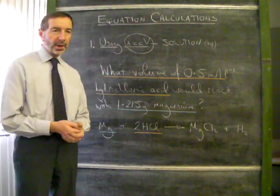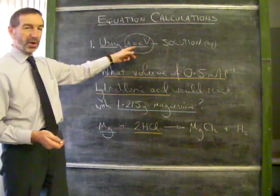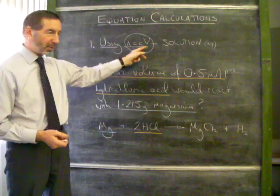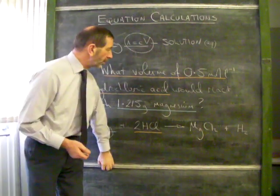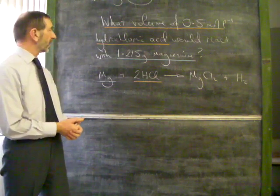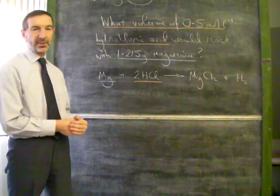Here's another calculation based on the idea that a solution uses the equation N equals CV. Number of moles equals concentration times volume. In this example, the question asks: what volume of 0.5 moles per liter hydrochloric acid would react with 1.215 grams of magnesium?